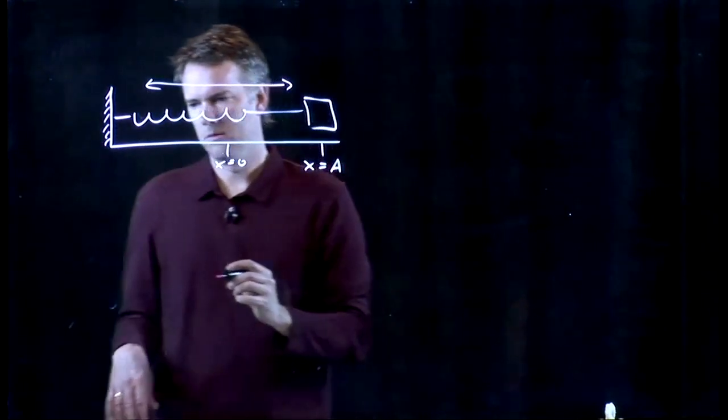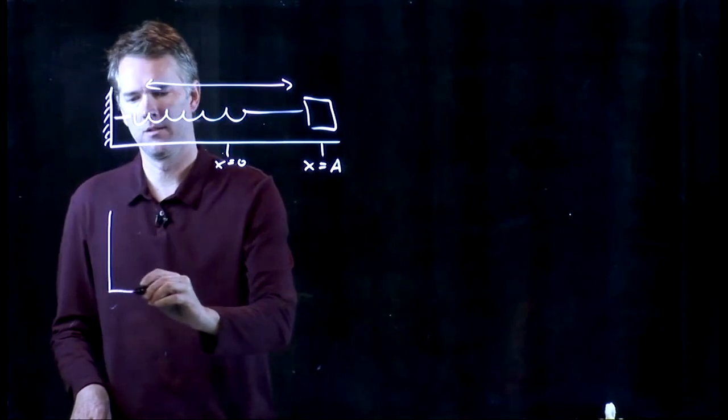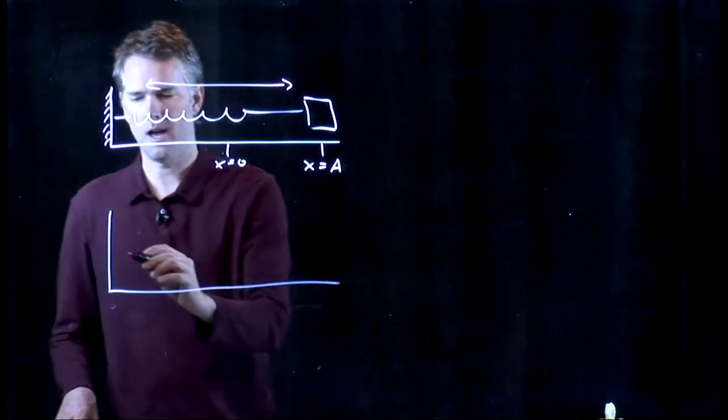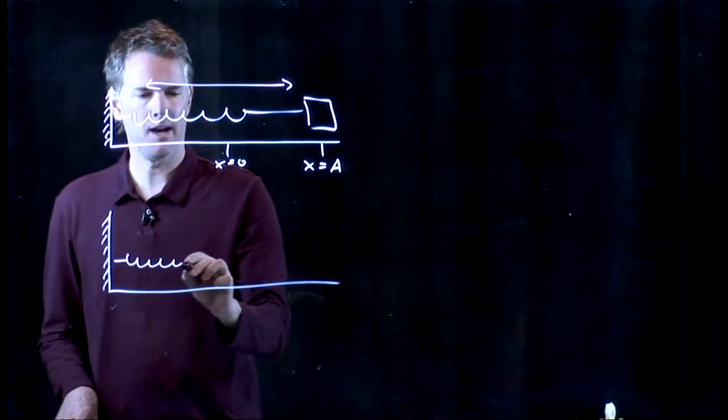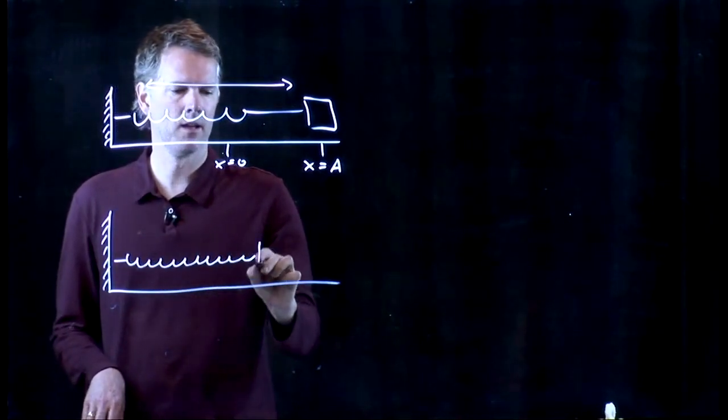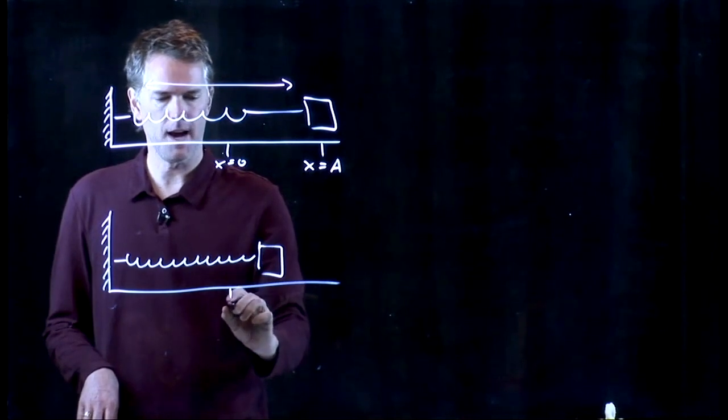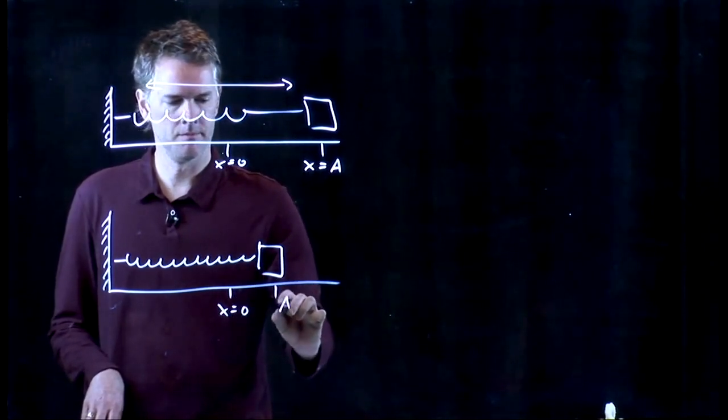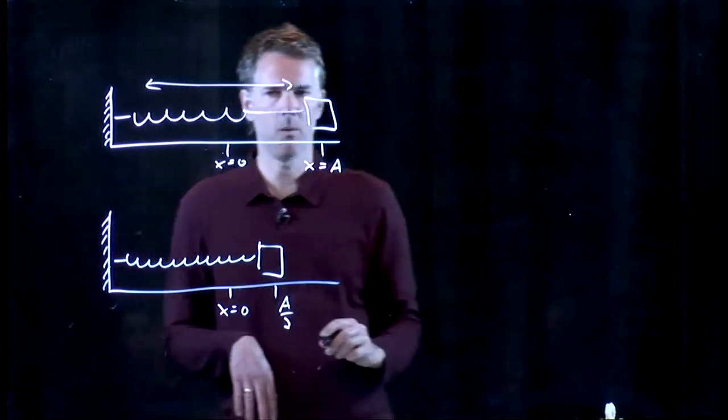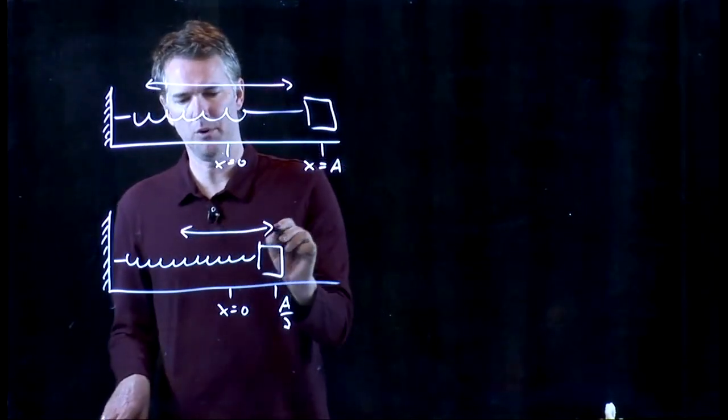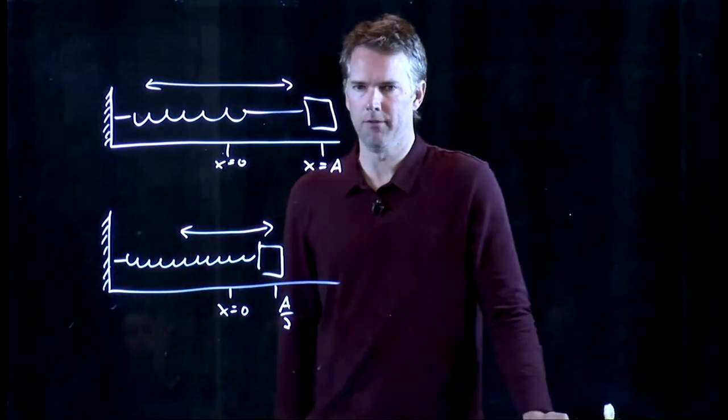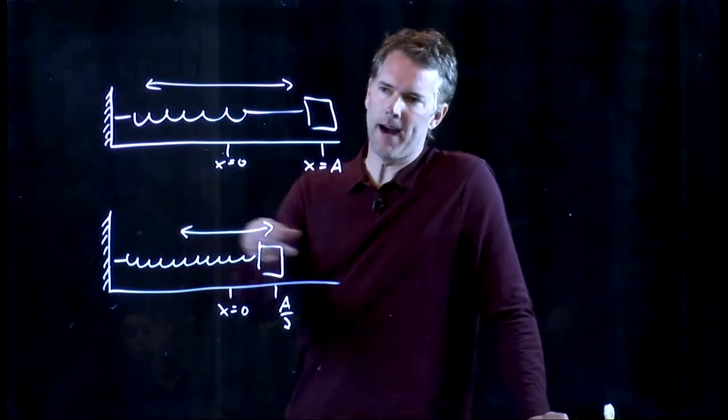Let's now do the following. Let's take that spring and instead of stretching it out to x equals A, let's just stretch it out to A over 2. And now we'll let it go from here. And now it's only going to compress the spring to negative A over 2 and it's going to go back and forth.